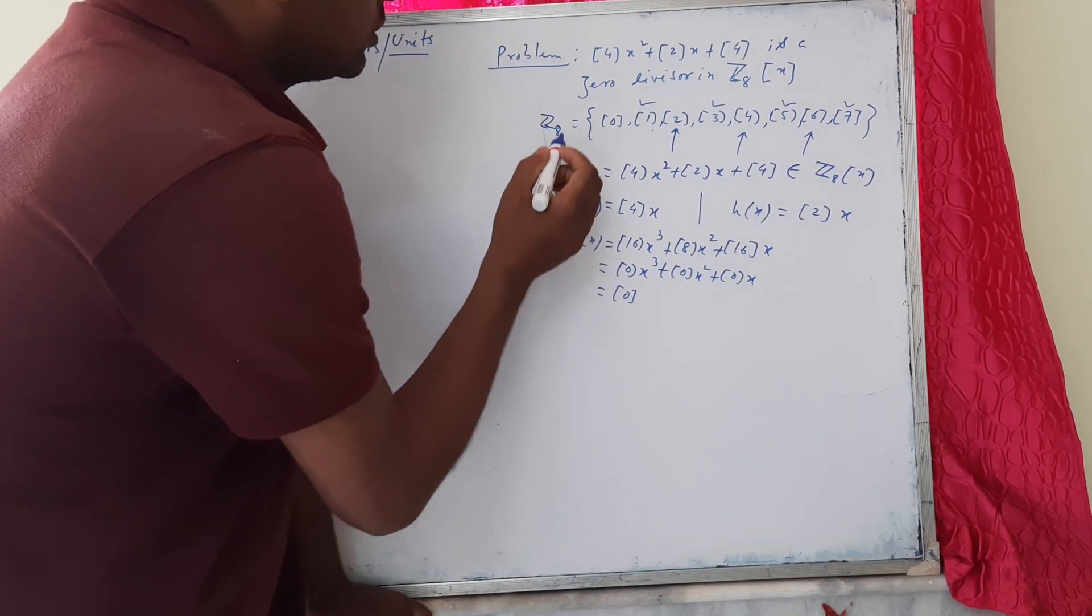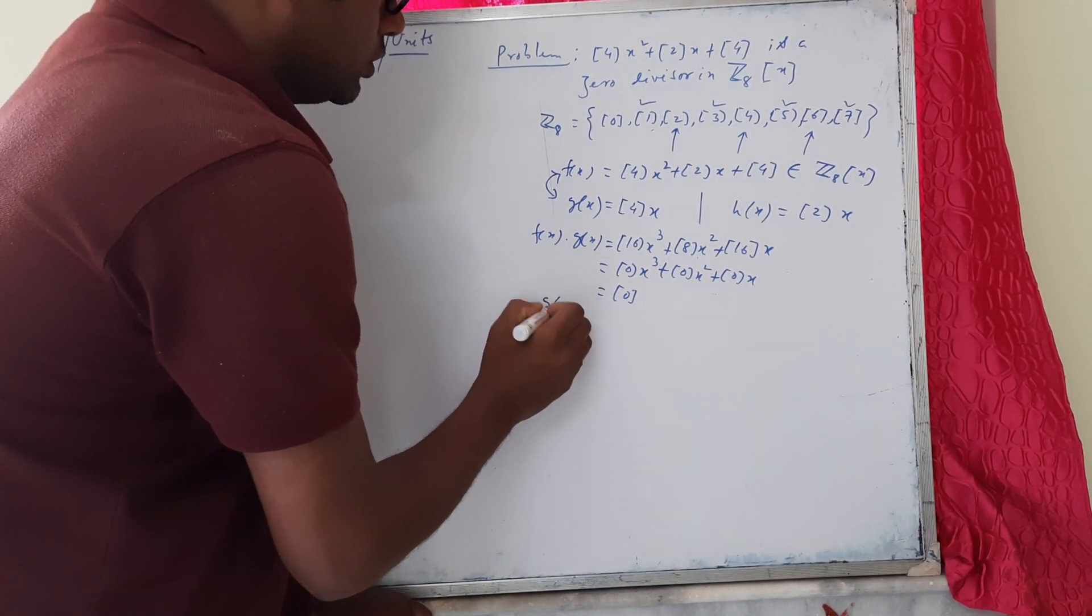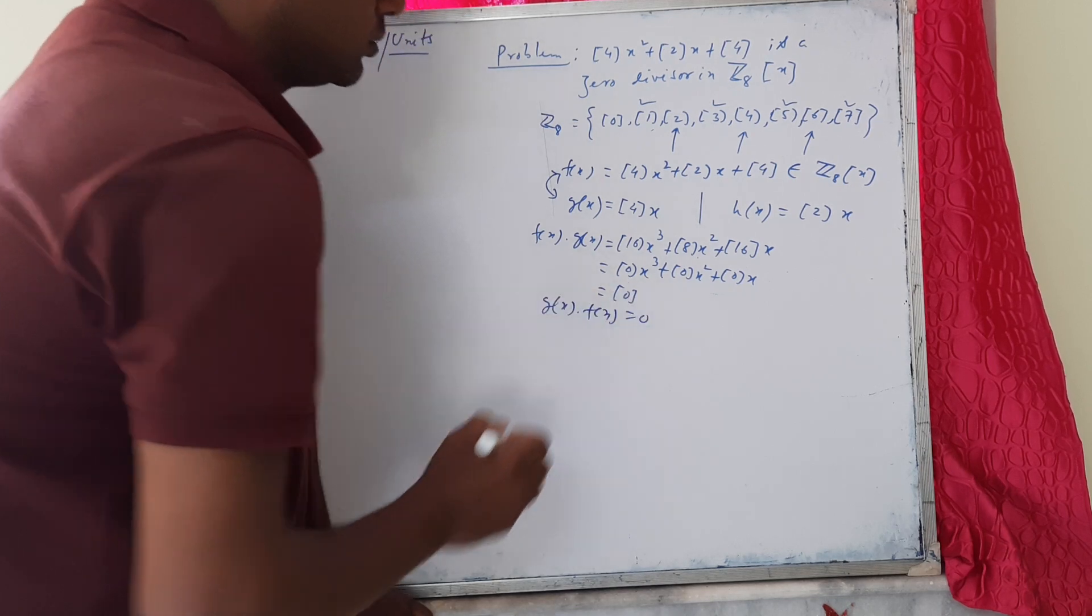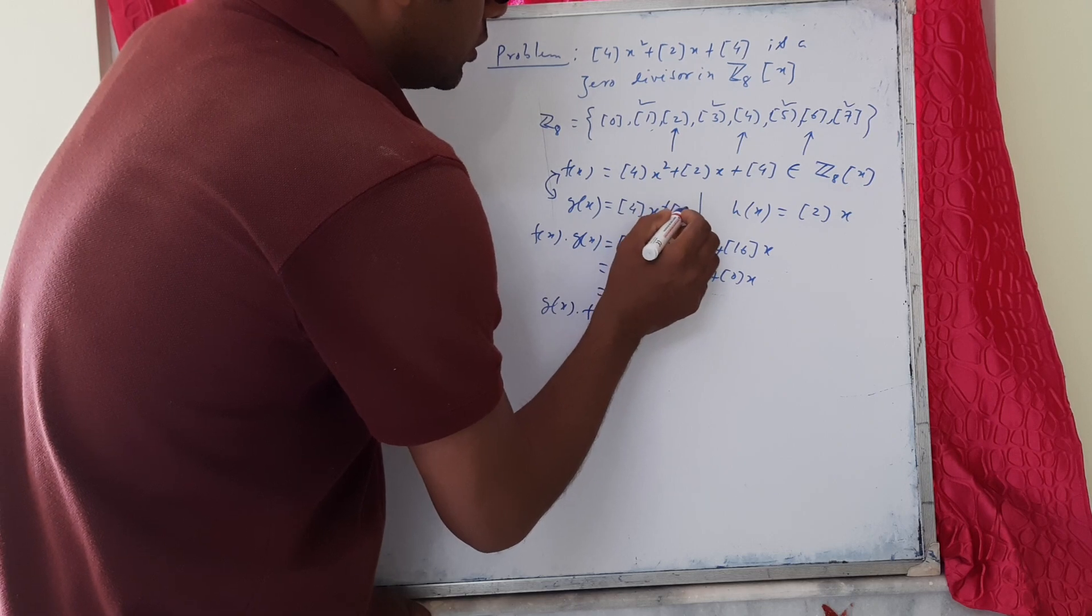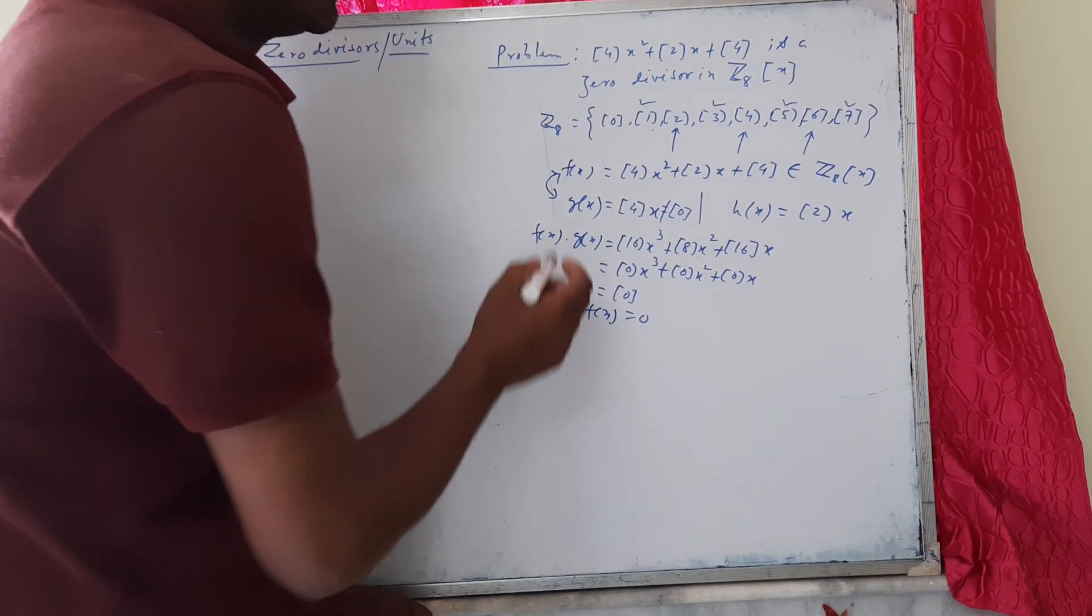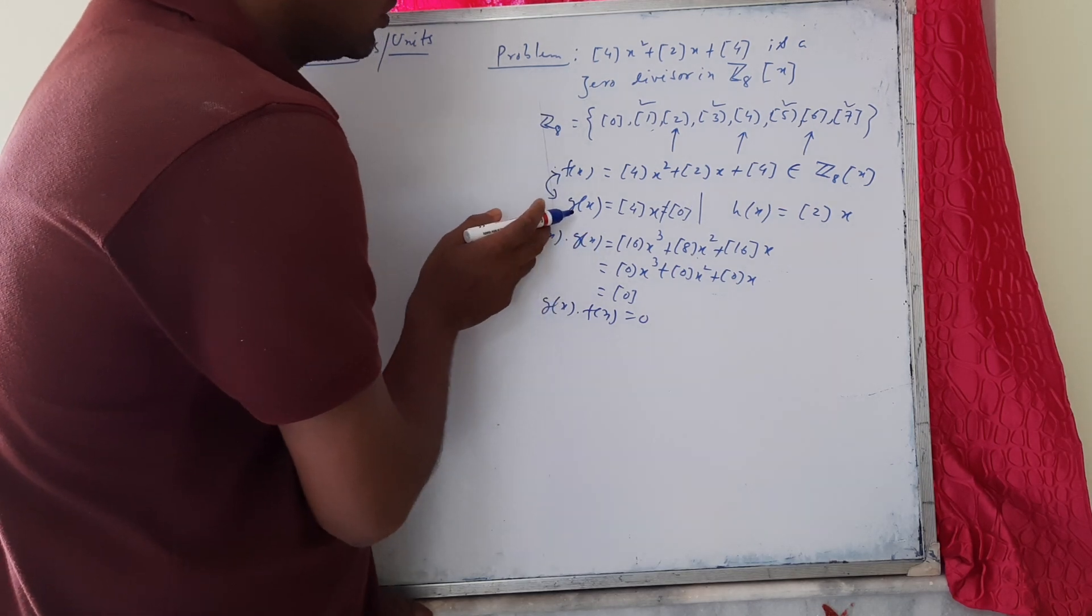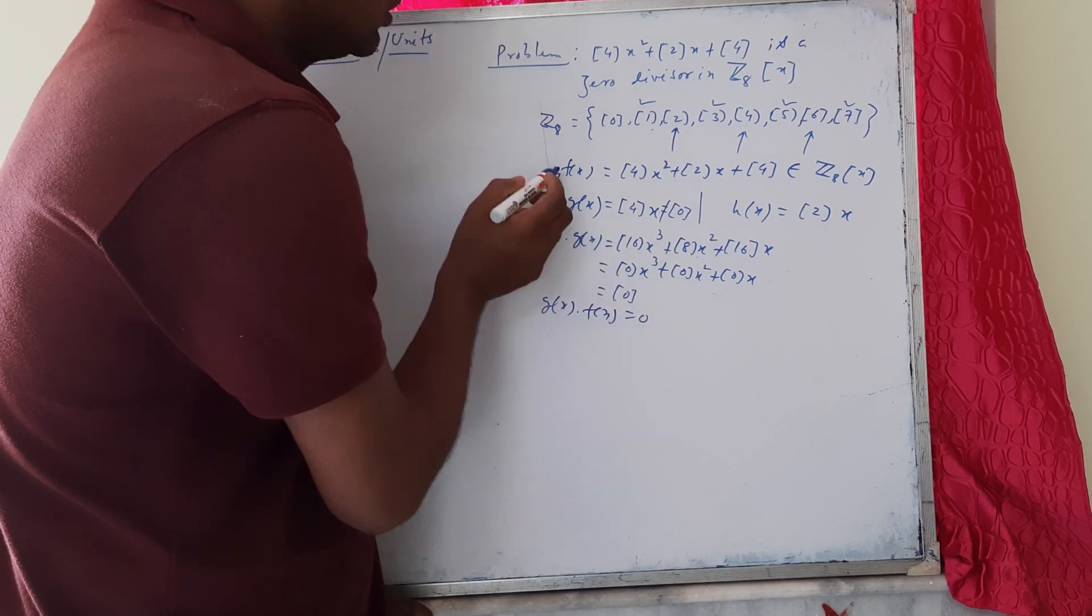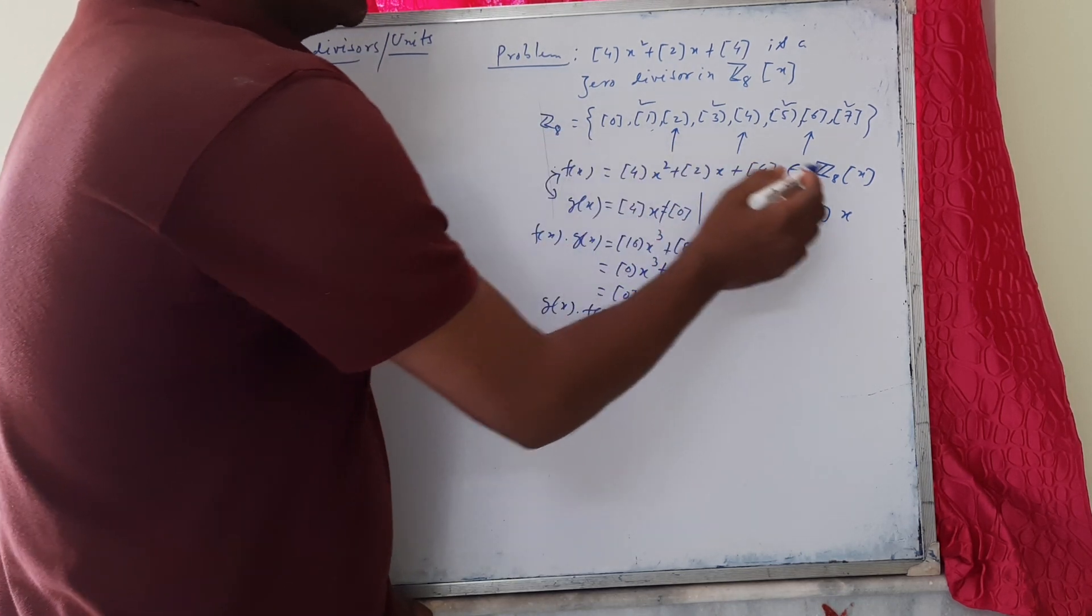Since Z₈[x] is commutative, we also have g(x)·f(x) = 0. Here we observe that f(x) is not equal to the zero polynomial, g(x) is also a non-zero element, but their product vanishes. So f(x) is a zero divisor in Z₈[x].